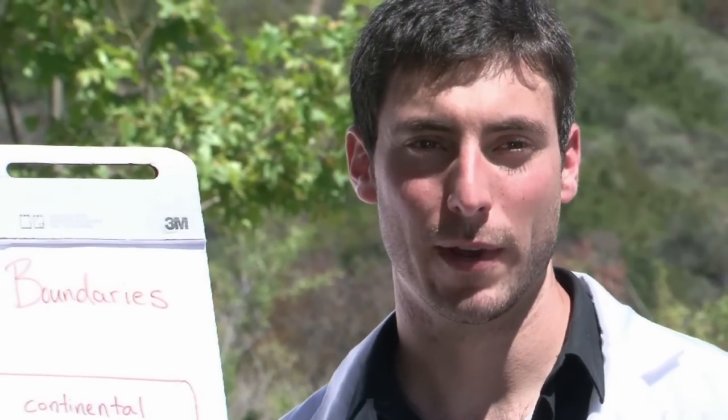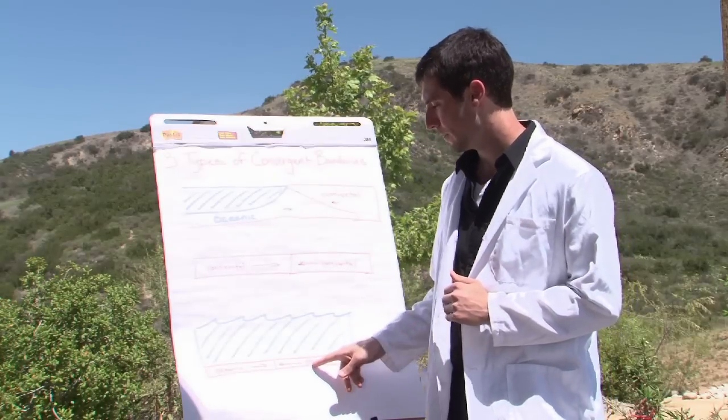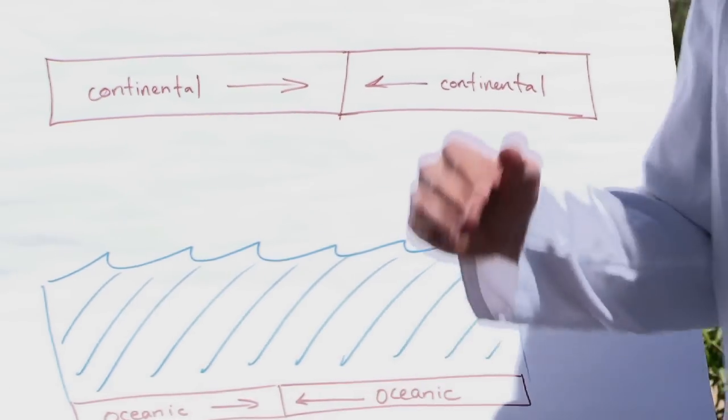The third type of convergent boundary is where an oceanic plate and an oceanic plate will mix. We have this drawn down here. This is the ocean, water on top and the two plates, the land underneath the ocean pushes together.